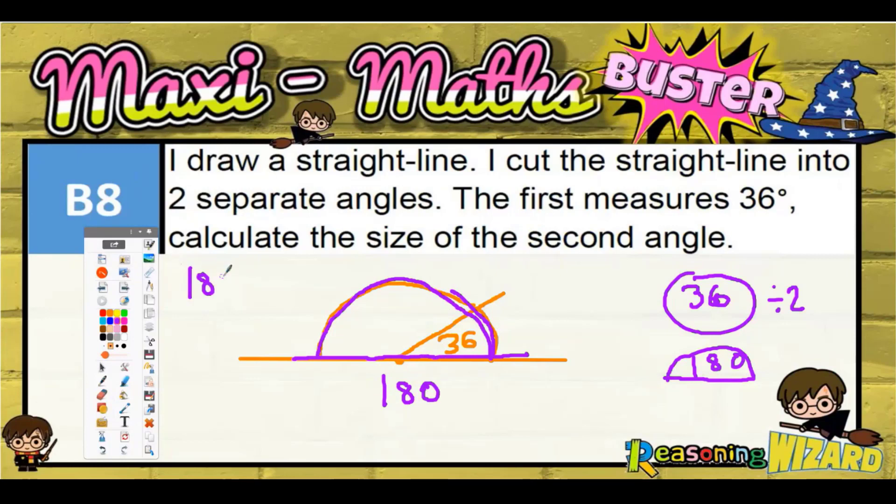So if you start with 180 and subtract off the 36, whatever's left will be whatever that missing angle is. Zero take away six you can't do, borrow from next door. Borrow from the eight, it becomes seven, and the one you've borrowed makes that into ten. Ten take away six is four, seven take away three is also four, one take away nothing is one. So the missing angle is going to be 144° and that is your answer: 144°.